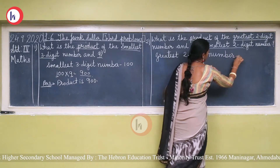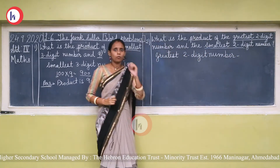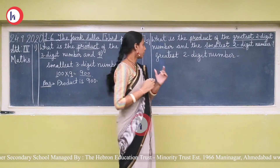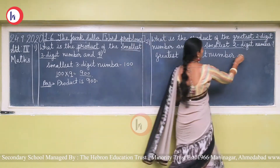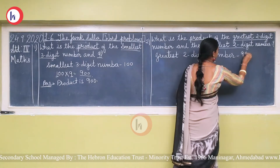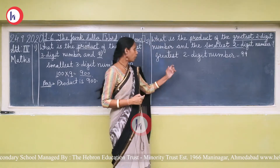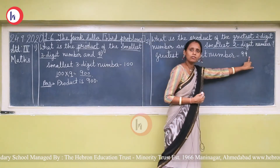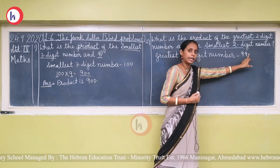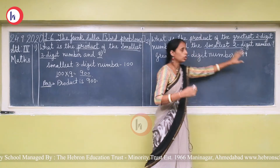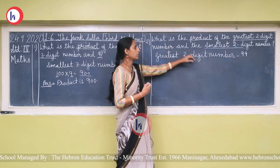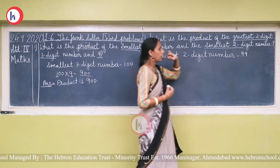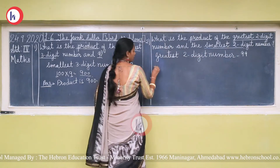What is the greatest two-digit number? The greatest one-digit number is 9, so the greatest two-digit number is 99 — two nines. If you want the greatest three-digit number, it would be 999. So here, the greatest two-digit number is 99.